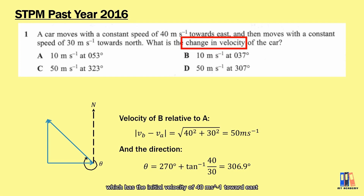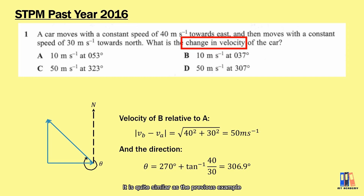The car has an initial velocity of 14 meters per second toward east and a final velocity of 30 meters per second toward north. It is quite similar to the previous example.